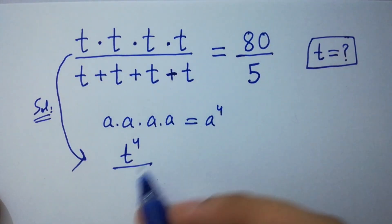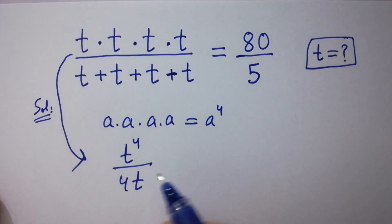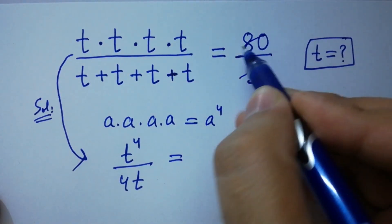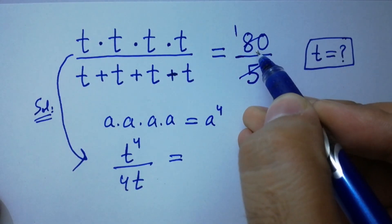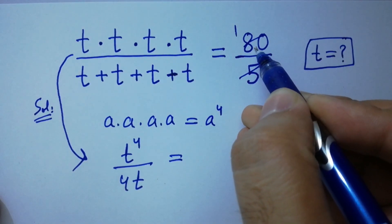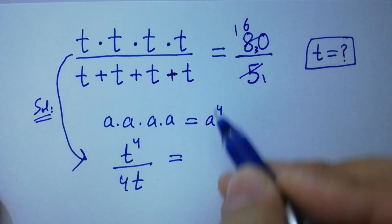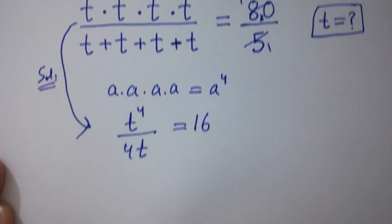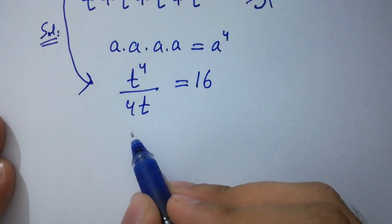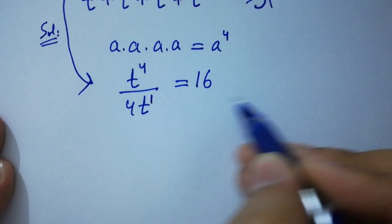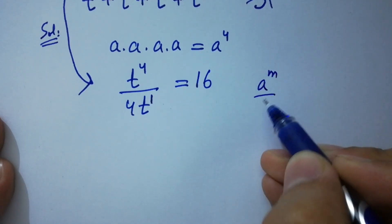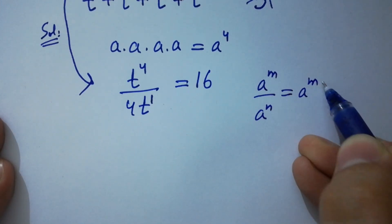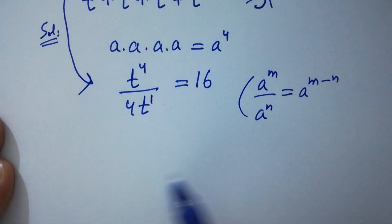t can be common, so we have 4t here. 80 over 5 equals 16, since 5 times 16 is 80. As we know, a to the power m over a to the power n equals a to the power m minus n.